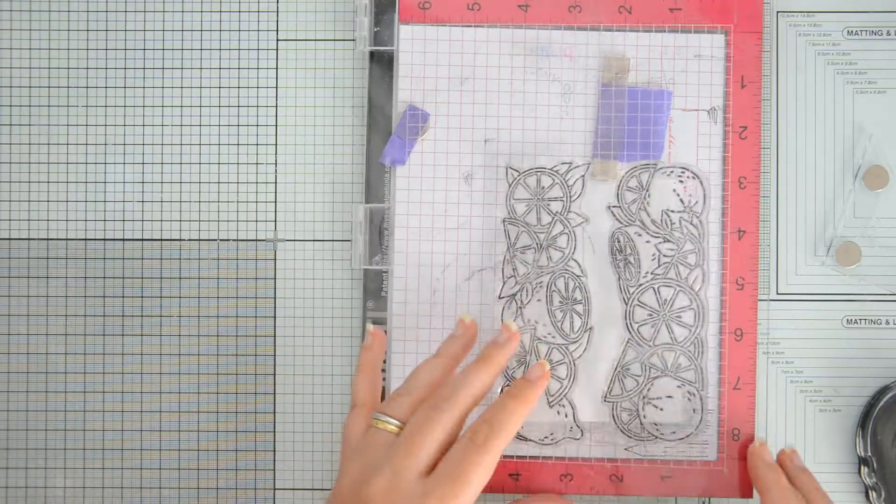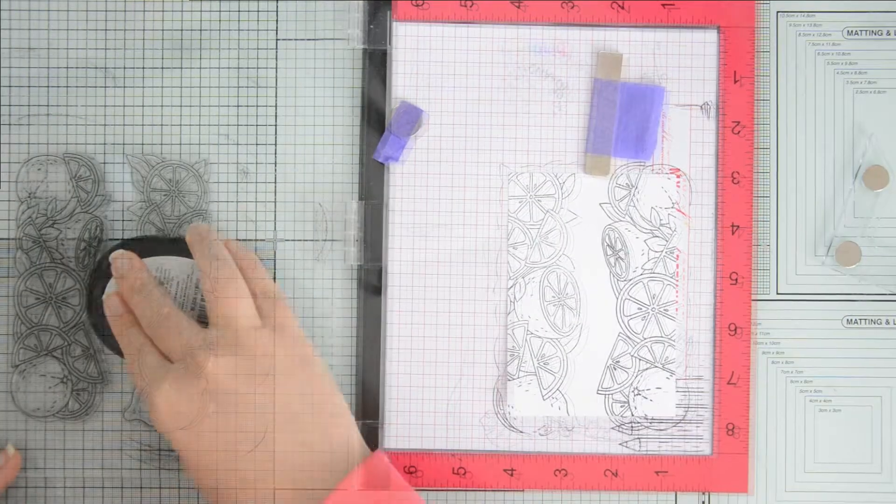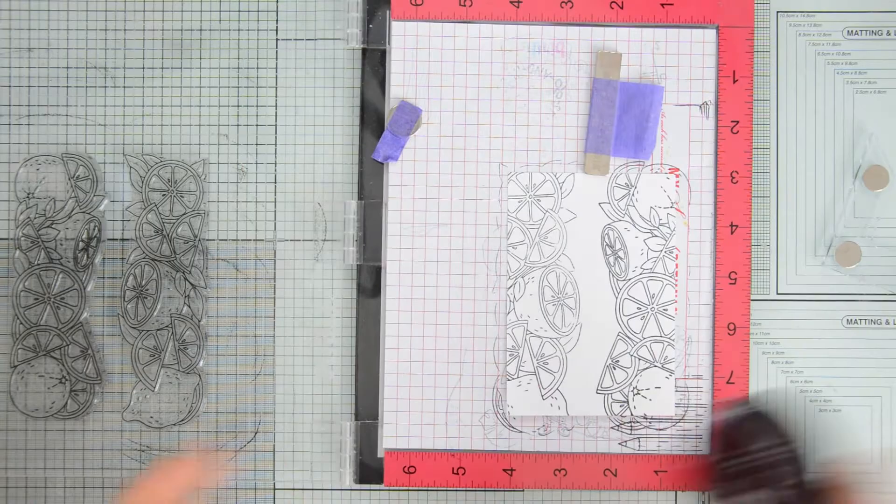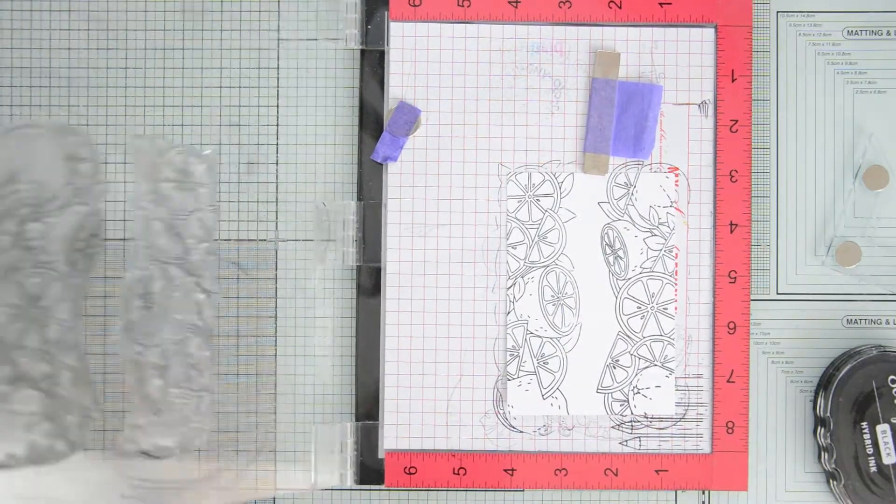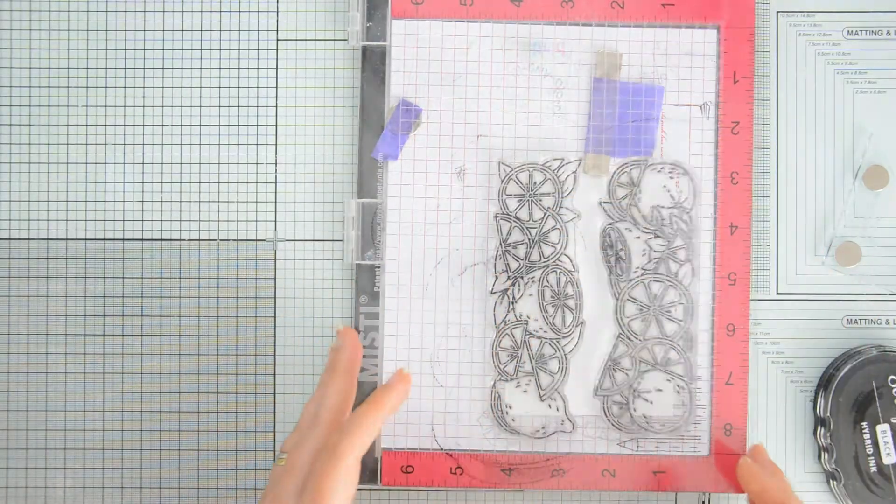But if it had I could put my creative corners back in the Misti, reposition the paper so that it was in exactly the same location as when I had started stamping, and then do my multiple stamping again.